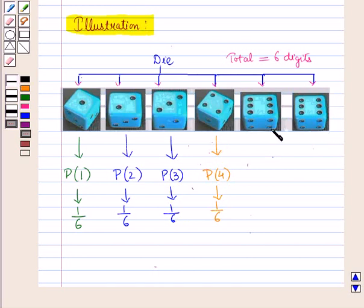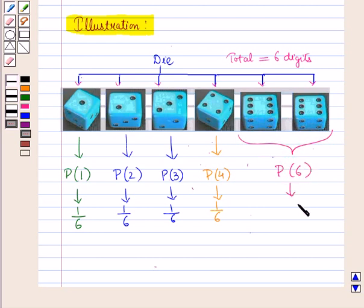Now we know that six is marked two times on the die. So the probability of getting the number six is the number of favorable outcomes, which is two, upon the total number of outcomes, which is six. So this is equal to one upon three.